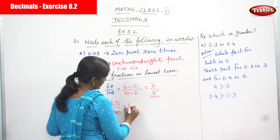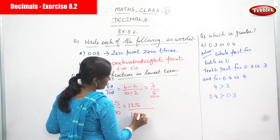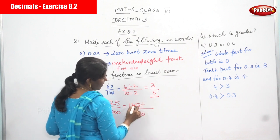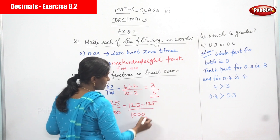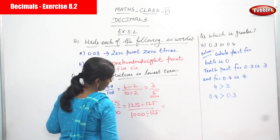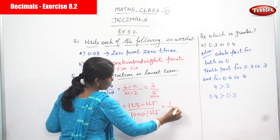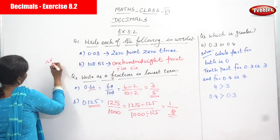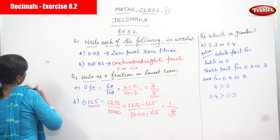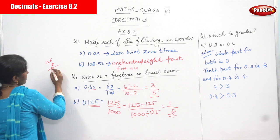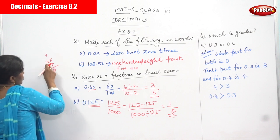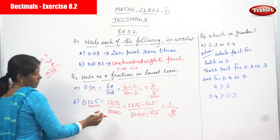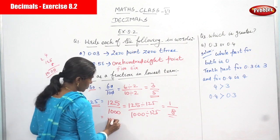So 125 divided by 1000. Divide both by 125: 125 divided by 125 gives 1, and 1000 divided by 125 gives 8. So the answer is 1 by 8. You can verify: 125 multiplied by 8 — 5×8 is 40, carry 4; 2×8 is 16 plus 4 is 20, carry 2; 1×8 is 8 plus 2 is 10 — giving 1000. Correct.